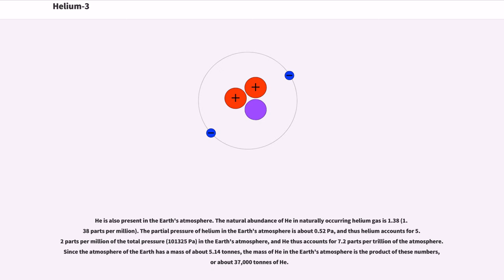He3 is also present in the Earth's atmosphere. The natural abundance of He3 in naturally occurring helium gas is 1.38 parts per million. The partial pressure of helium in the Earth's atmosphere is about 0.52 pascals, and thus helium accounts for 5.2 parts per million of the total pressure, 101,325 pascals, in the Earth's atmosphere, and He3 thus accounts for 7.2 parts per trillion of the atmosphere. Since the atmosphere of the Earth has a mass of about 5.14 quadrillion tons, the mass of He3 in the Earth's atmosphere is the product of these numbers, or about 37,000 tons of He3.